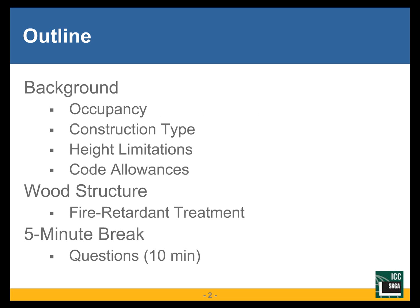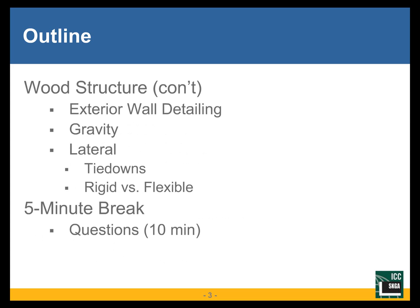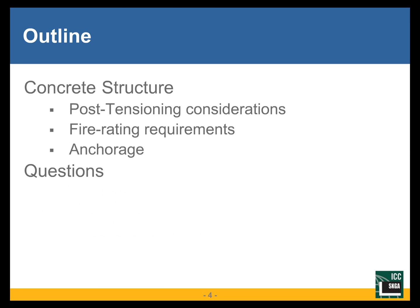Starting with a quick outline: we'll begin with background covering architectural considerations and code provisions for podium structures. Then we'll move into the wood structure, talking about fire retardant treatment. After the first break, we'll continue with the wood structure, covering gravity and lateral analysis unique to a five-story building. After the second break, we'll move on to the concrete structure, focusing on post-tensioning considerations, tendon design using fire rating requirements, and anchorage of the wood building to the concrete podium.